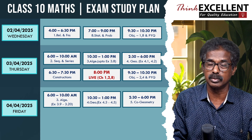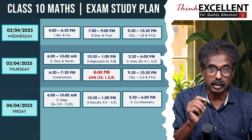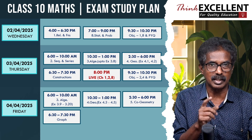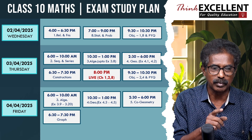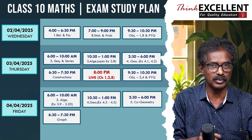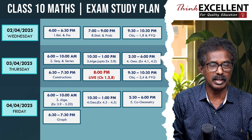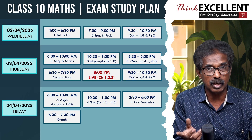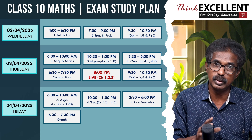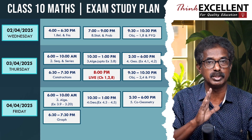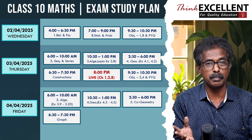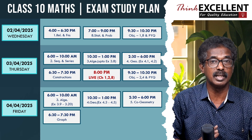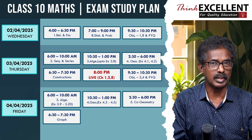From 2:30 to 6 o'clock, there is a little time. Practice this — it is very important. Then 6:30 to 7:30, go through construction from the previous day. The quadratic graph shows the nature of the roots — go through that. Also go through variation: direct variation, indirect variation, inverse variation.